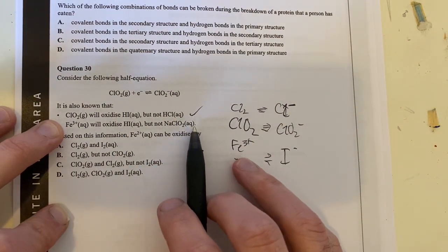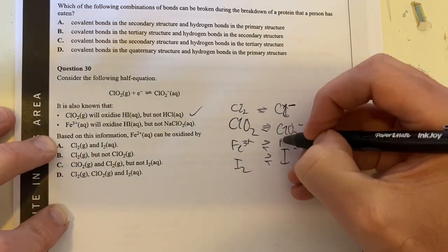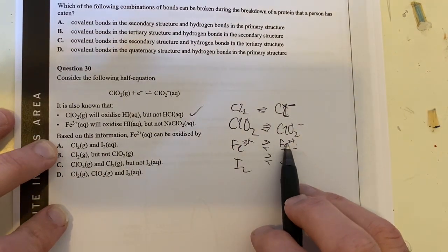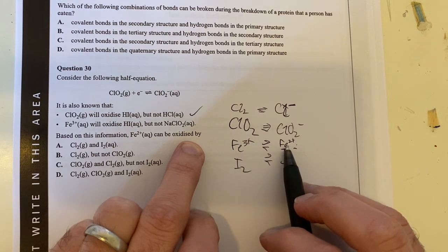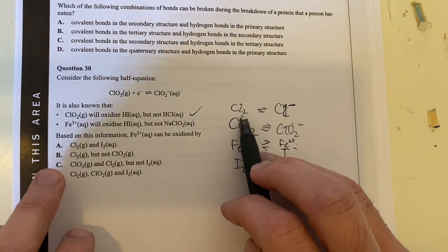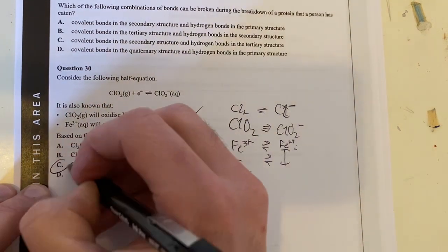So based on this information, what can Fe2 positive, this is going to be forming from this guy here, Fe2 positive here. So therefore, this guy is going to be able to be oxidized by everything above it, so it will be able to be oxidized by the ClO2 and the Cl2. So therefore C is looking good, but it cannot be oxidized by I2, so the answer is C.